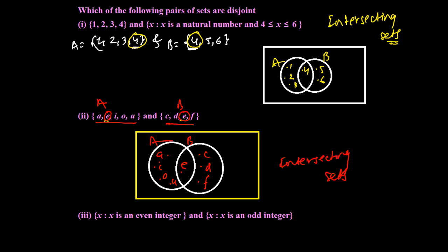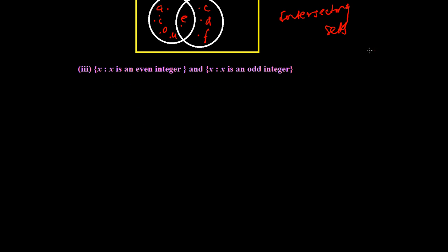Now the last one let's try. X is an even integer, so even integers, all the even integers, it may be positive or may be negative. So they are not mentioning, so it will be very bigger by the way. It will be minus 4, minus 2, and then 0 is also even integer, 0, 2, 4, 6 and so on.